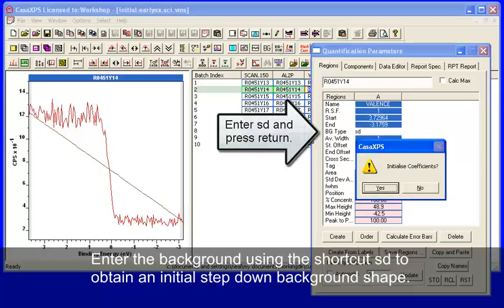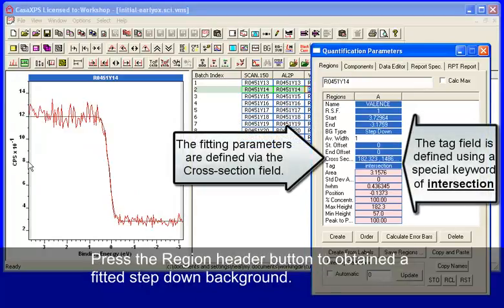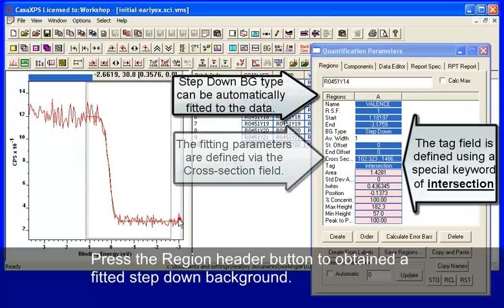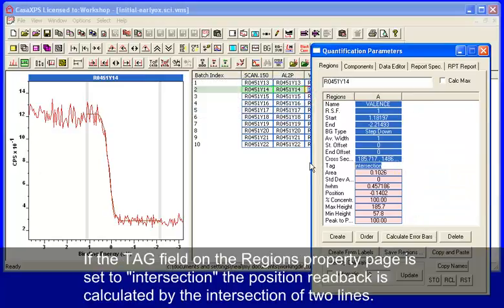The other one is based on calculating a horizontal line as part of the step function, and we can see these two lines if we enter draw lines in the tag field.